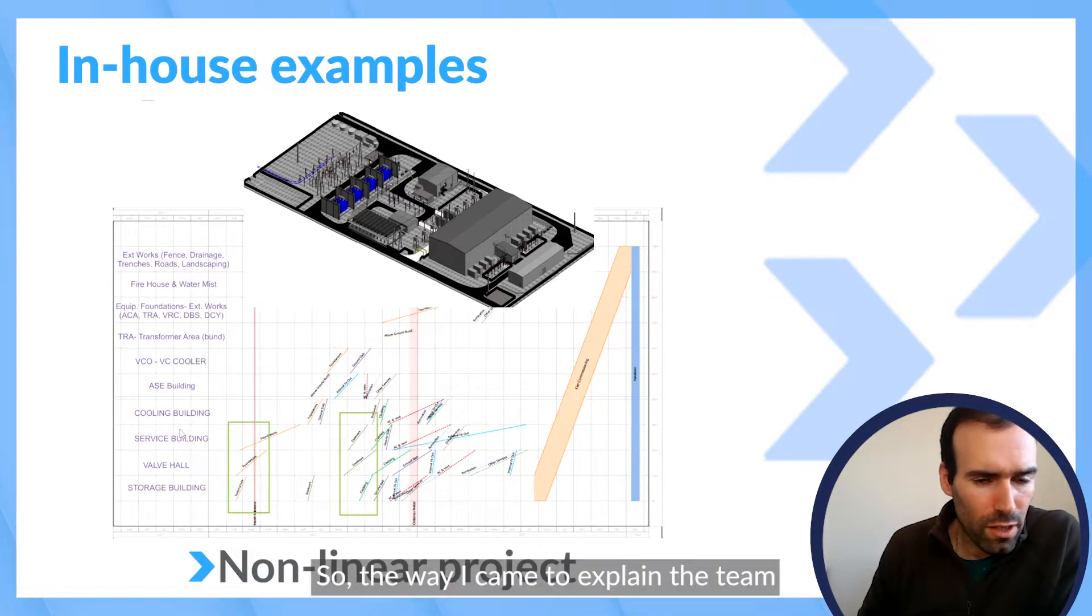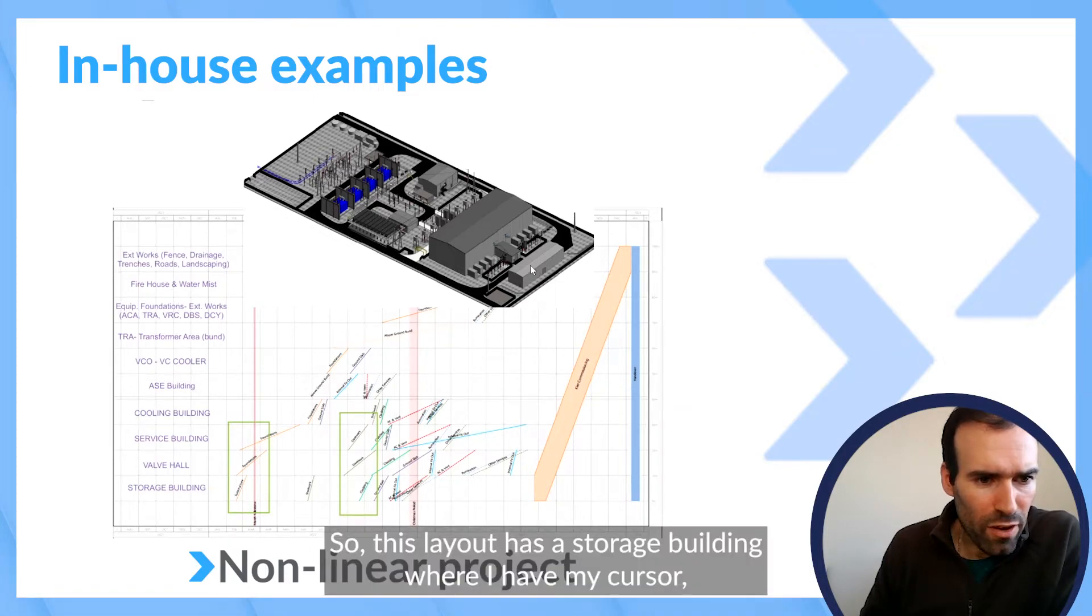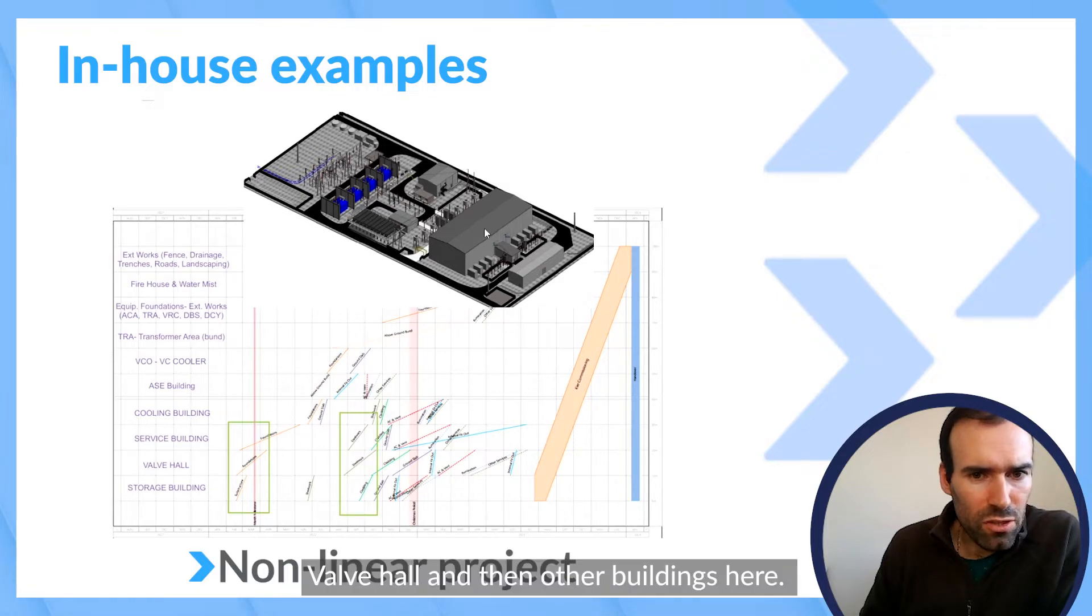So the way I came to explain the program to the team a little bit was to divide the layout into the various buildings that we have. So this layout has a storage building where I have my cursor, a valve hall, and then other buildings here, scattered.